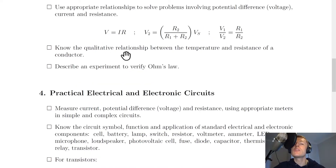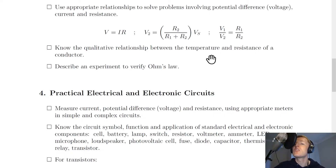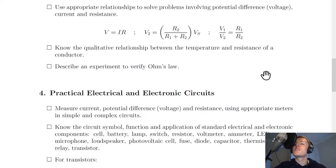It then says to know the qualitative relationship between temperature and resistance of a conductor. As the temperature of a conductor increases, the resistance increases as well. We looked at this with non-ohmic conductors such as the light bulb, where increasing temperature causes resistance to increase as current increases. This is because as temperature increases, the atoms of the conductor material vibrate more, increasing the resistance to the flow of electrons (i.e. current).